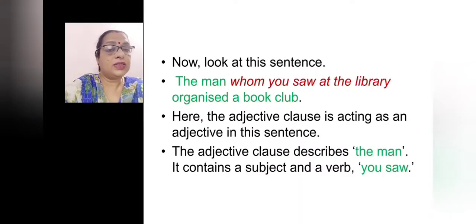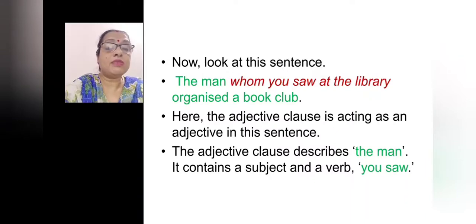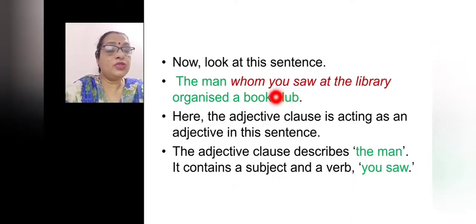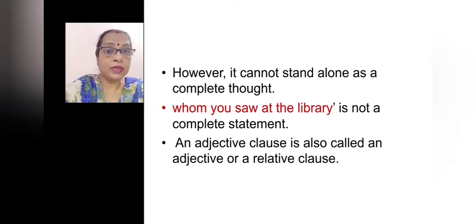Now look at this sentence: 'The man whom you saw at the library organized a book club.' Here the adjective clause is acting as an adjective. The man — which man? Whom you saw at the library. So it is describing the man. The adjective clause 'whom you saw at the library' describes the man. It contains a subject and a verb — you saw — so you is the subject and saw is the finite verb. However, it cannot stand alone as a complete thought — 'whom you saw at the library' is not a complete statement.